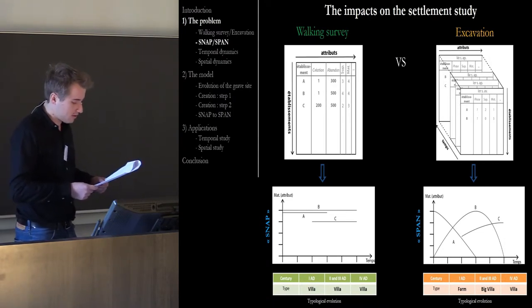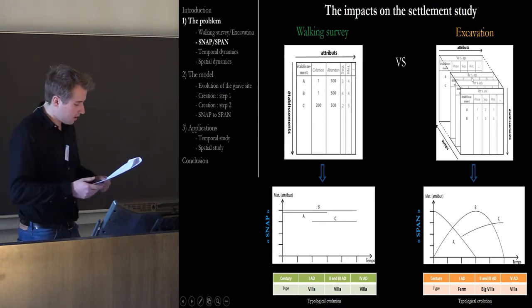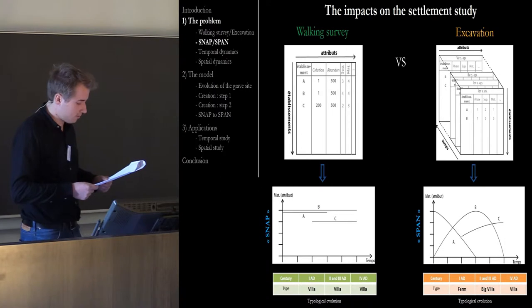The perfect situation is to compile data forming a three-dimensional cube such as the matrix of geographical information of Berry. However, this ideal configuration can be offered only by information stemming from excavations. The data from prospecting do not possess full temporal dimension. They generate only three-dimensional chronological elements: the data of appearance, the data of disappearance and the duration of existence.